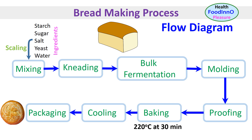In order to understand processing, unit process, and unit operation, it would be good to discuss the flow diagram first. A flow diagram is used to visualize the complete process or steps very clearly. We can discuss this by considering the bread-making process, which could include seven steps: mixing, kneading, bulk fermentation, molding or shaping, proofing, baking, cooling, and packaging. It is common to draw a box for each step and include the name of the step inside. In some instances, critical conditions or schematic symbols could be used.